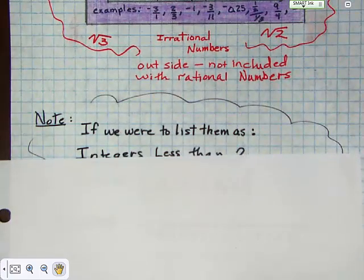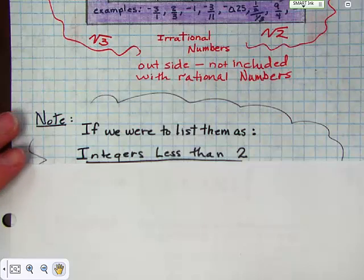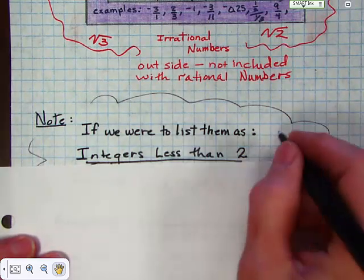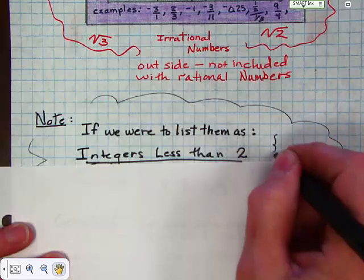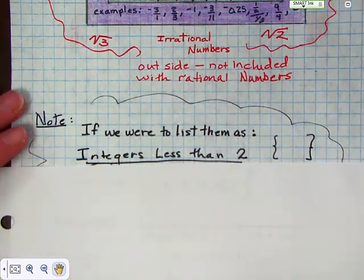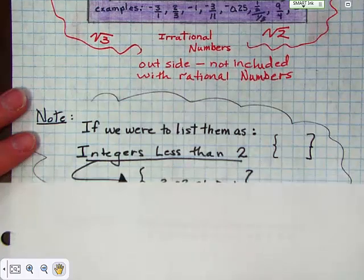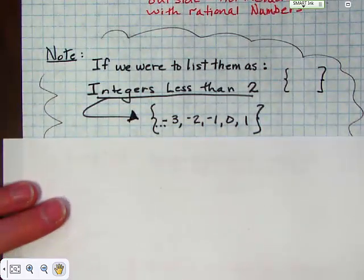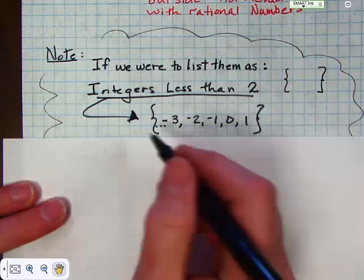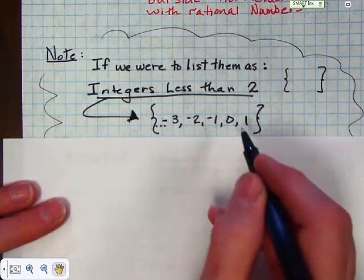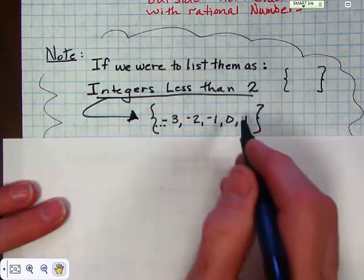Here's a little sidebar that's part of our lesson. If we were to list integers less than 2 in brackets — remember those brackets? They look like this. If you wanted to list integers less than 2, this is what you would do: dot, dot, dot, negative 3, negative 2, negative 1, 0, 1.